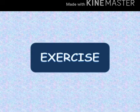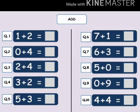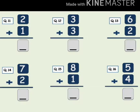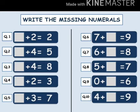These are all your homeworks. You have to do it in your maths copy. Add: 1 plus 2, 0 plus 4, 2 plus 4, 3 plus 2, 5 plus 3, 7 plus 1, 6 plus 3, 5 plus 0, 0 plus 9, 4 plus 4, 2 plus 1, 3 plus 3, 6 plus 2, 7 plus 2, 8 plus 1, 5 plus 4. Write the missing numerals: blank plus 2 equals to 2, blank plus 4 equals to 5, blank plus 4 equals to 8, blank plus 2 equals to 3, blank plus 3 equals to 7, 7 plus blank equals to 9, 6 plus blank equals to 8, 5 plus blank equals to 7, 0 plus blank equals to 6, 4 plus blank equals to 9.